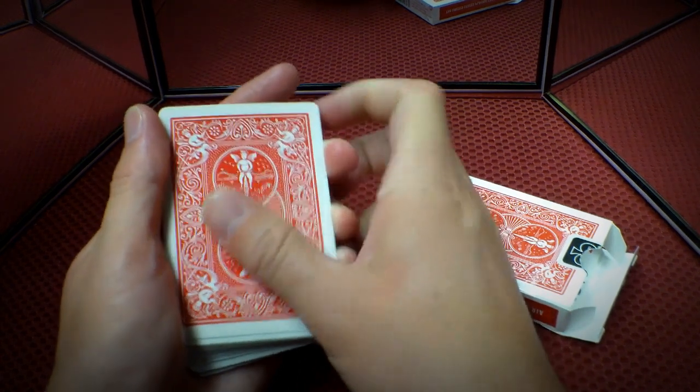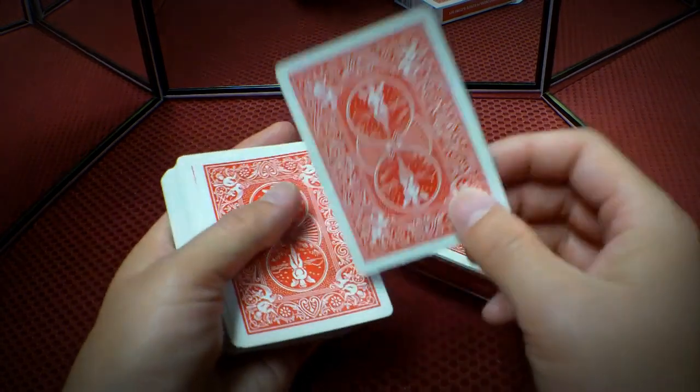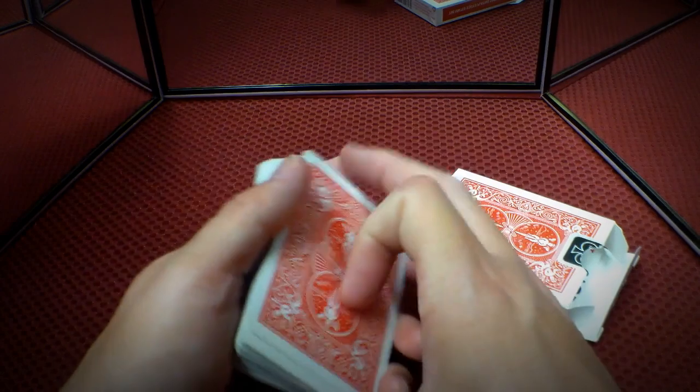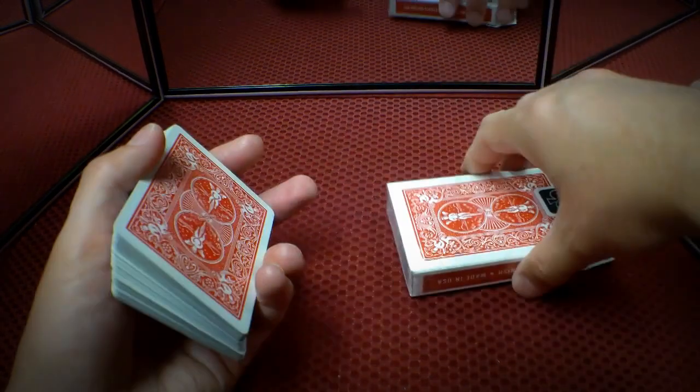So we're going to use the double stick tape as a means of removing our duplicate card when the time comes. So place that on the top. So this is my setup. My force card is down here with the crimp. My joker's up here that we're going to use to make the duplicate disappear.